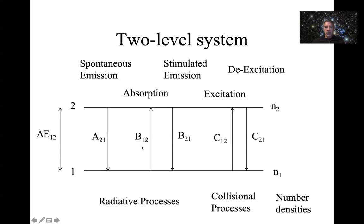The opposite process is absorption: a photon with exactly the right energy comes in, excites the electron from level one up to level two, and the photon is destroyed. That is the process of absorption.